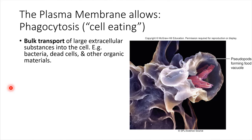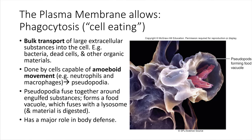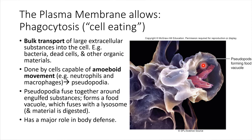So phagocytosis — what's happening here is amoeboid movement. Remember amoebas from general biology: amoebas move in a very special way. They form these pseudopodia, false feet. Looking at the picture here, back over here is the cell body, and these are pseudopodia that are sort of reaching out to the right and they're wrapping around what I think are bacteria being shown right here. So the bacteria are being engulfed.